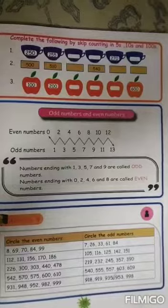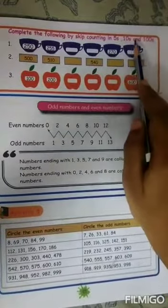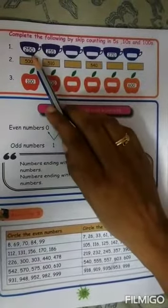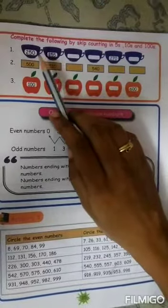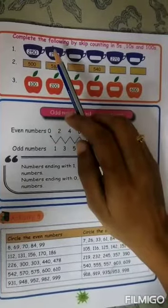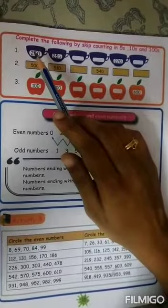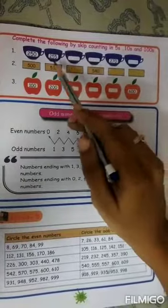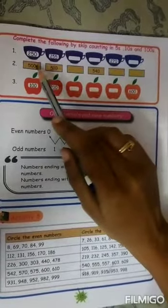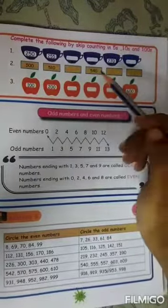On the next page: complete the following by skip counting in fives, tens and hundreds by observing the first two numbers and comparing them. Here two fifty is given, then two fifty five. Four numbers are excluded — two fifty one, two fifty two, two fifty three and two fifty four are not written. Every fifth number is written, so it is skip counting in fives. Find the difference between the first two numbers to determine what counting it is, then continue writing the remaining sets.